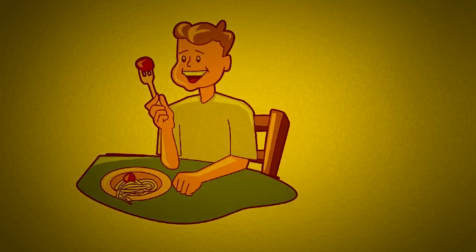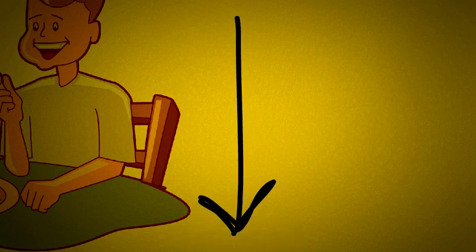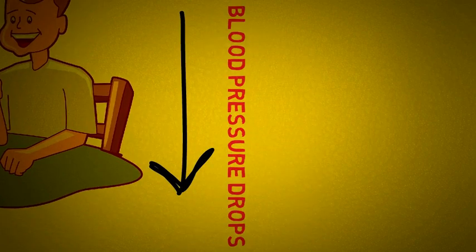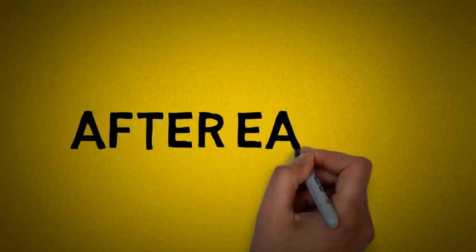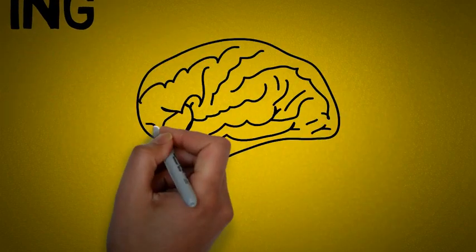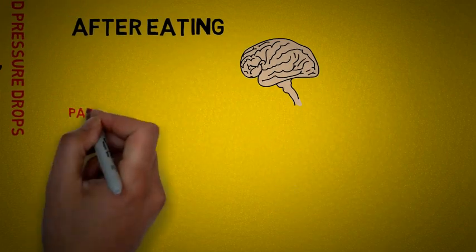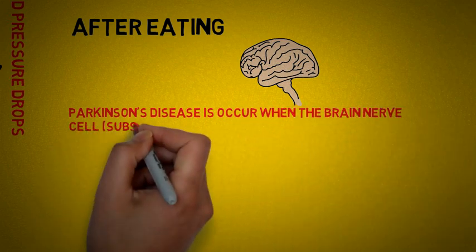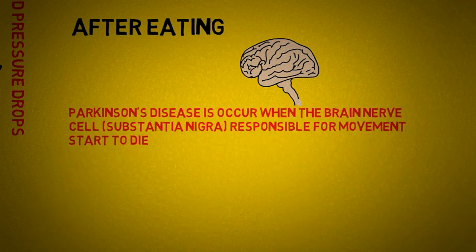2. Postprandial Hypotension. This is the drop in blood pressure that occurs right after eating. Older adults, especially those with Parkinson's disease, are more likely to develop postprandial hypotension. Parkinson's disease is when the brain nerve cells called the substantia nigra start to die.